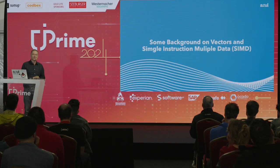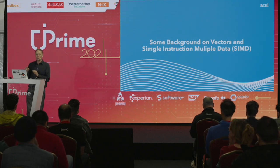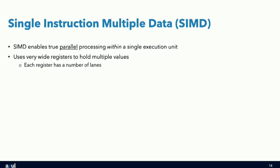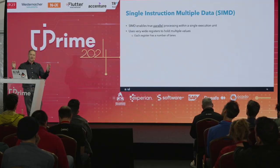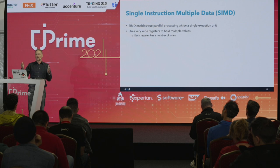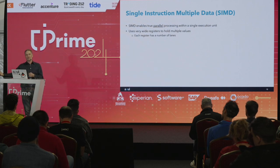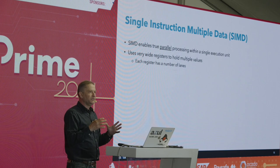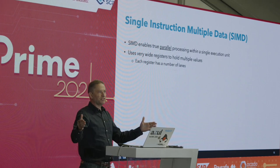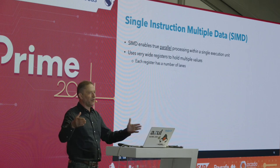Now let's get into the vector side of things. Single instruction multiple data (SIMD) is where we have true parallel processing — doing more than one thing guaranteed at the same time. We do this using a very wide register in the processor: 128-bit, 256-bit, 512-bit, or in extreme cases 2048 bits. We can load multiple values into that register and have them all processed in a single clock cycle — true parallelism. The number of values the register holds is what we call the number of lanes.